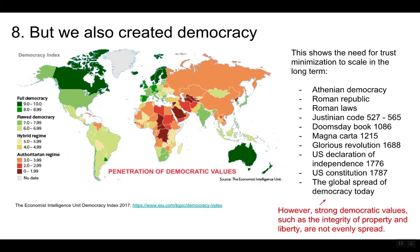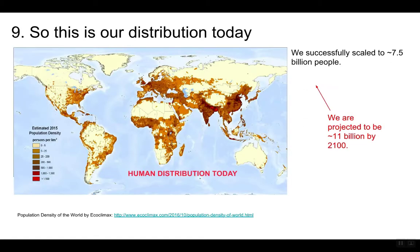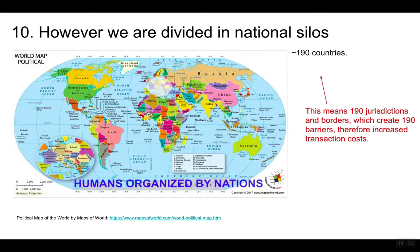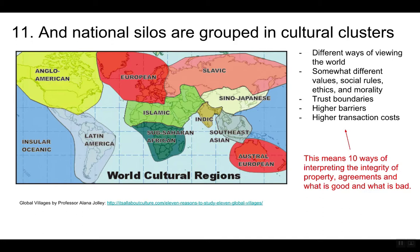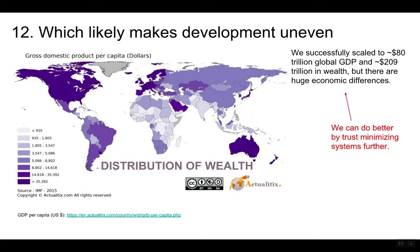But we also created democracy. However, strong democratic values, such as the integrity of property and liberty, are not evenly spread. So this is our distribution today. We successfully scaled to 7.5 billion people and are projected to be 11 billion by 2100. However, we are divided in national silos — 190 jurisdictions and borders — which create 190 barriers and therefore increased transaction costs. And national silos are grouped in cultural clusters, meaning 10 ways of interpreting the integrity of property agreements and what is good and bad, which likely makes development uneven.